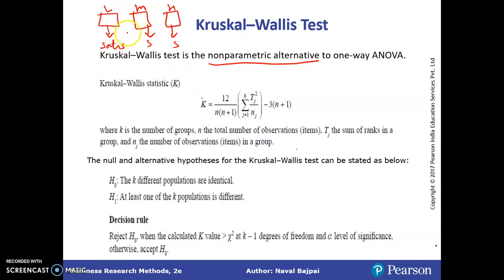So to check the difference whether the difference exists between any of the two groups, we may conduct one-way ANOVA. However, there are some conditions for doing one-way ANOVA.